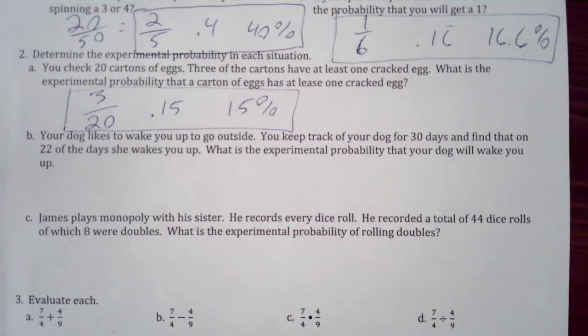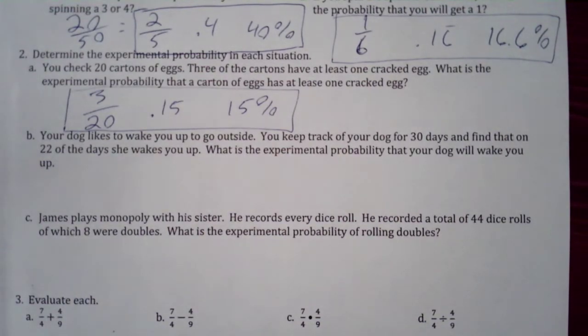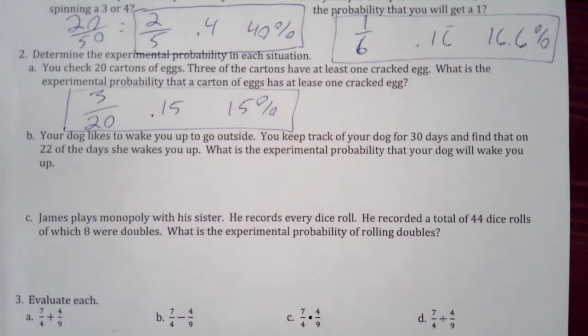Your dog likes to wake up to go outside. You keep track of your dog for 30 days and find that on 22 of the days she wakes up. What is the experimental probability that your dog will wake up? Don't read into that question too much. So let's read it again. Obviously your dog is going to wake up every day. Your dog is not dying. It's just when you come around, your dog wakes up 22 of the 30 days.